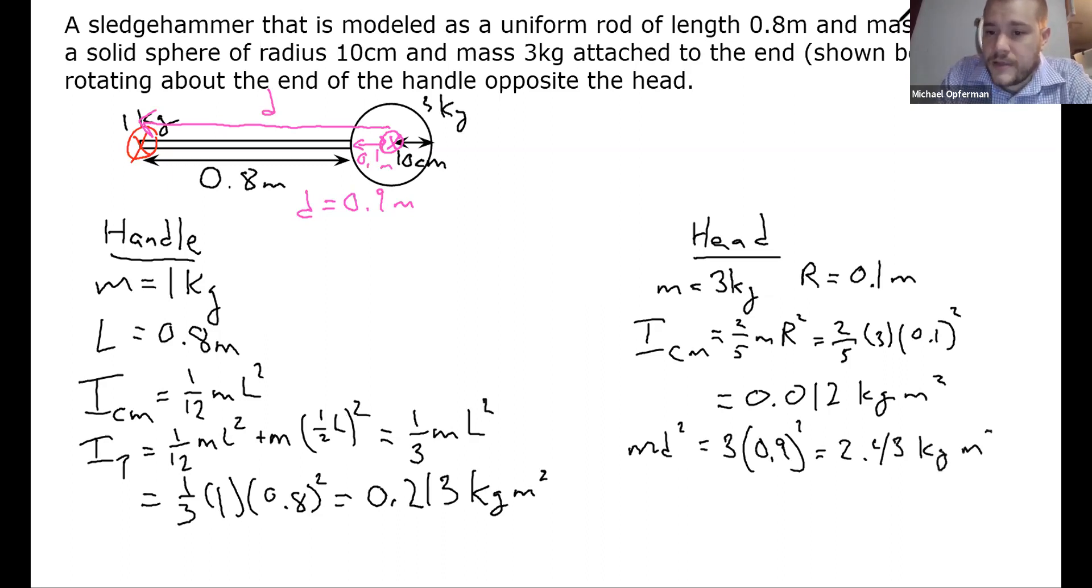And you can see, actually, this parallel axis term for the head of the hammer ends up being almost all the moment of inertia. So the total for the head of the hammer is going to be these two added together. 2.43 plus 0.012 is going to be 2.44. So the center of mass one makes barely any contribution in this case.